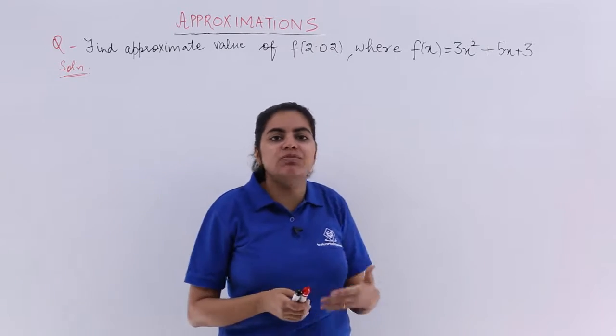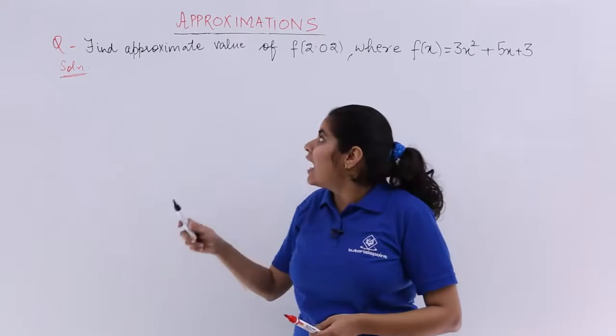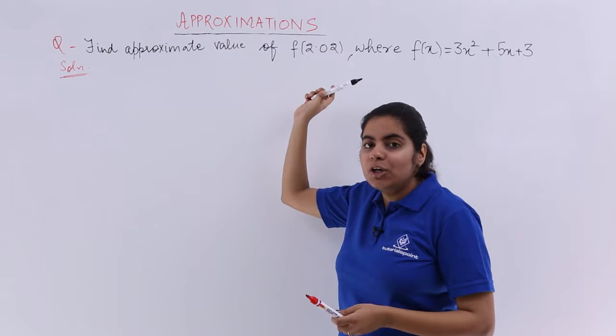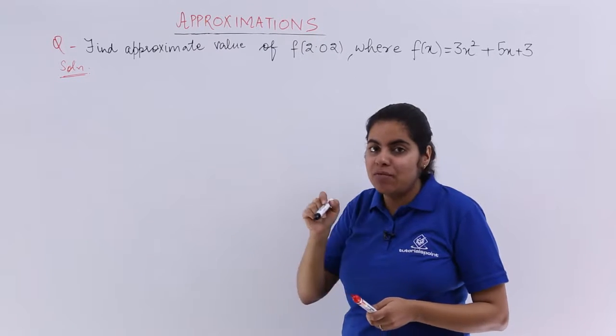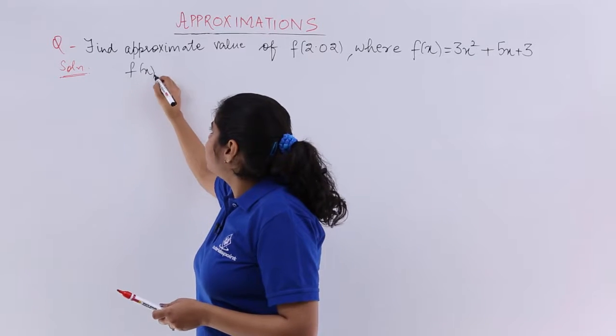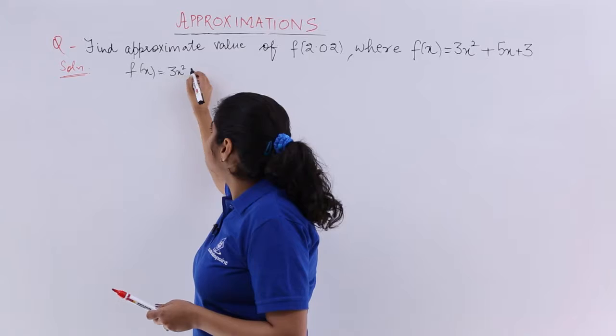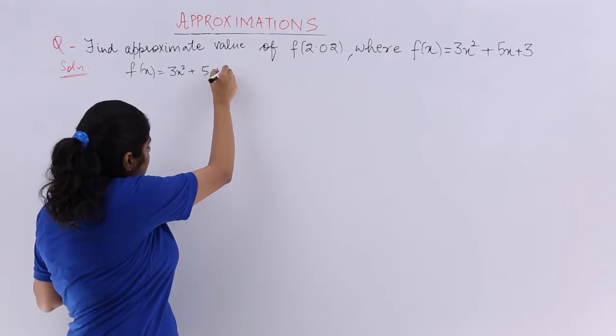So this is the next variety of problem that you can see in the approximations. It has the approximate value for a polynomial function f(2.02) is the value at which you have to arrive at. So my function is given to me as 3x² + 5x + 3.